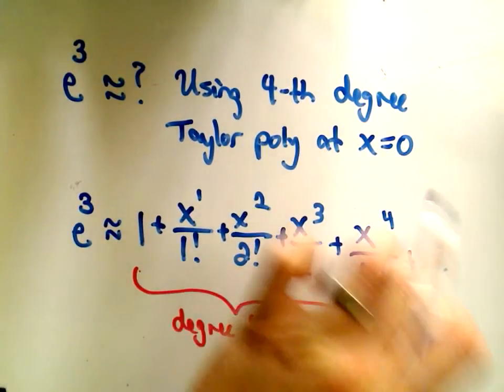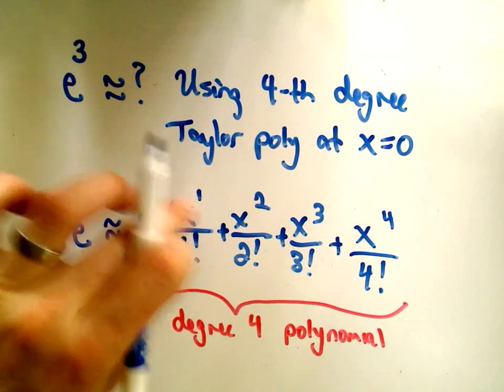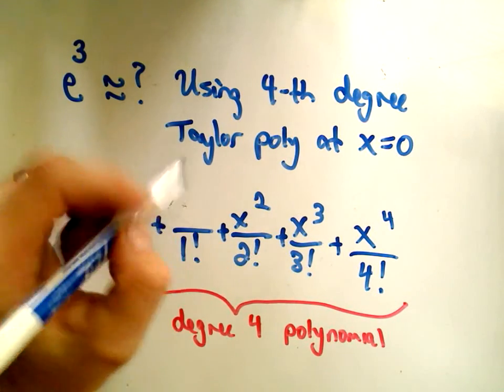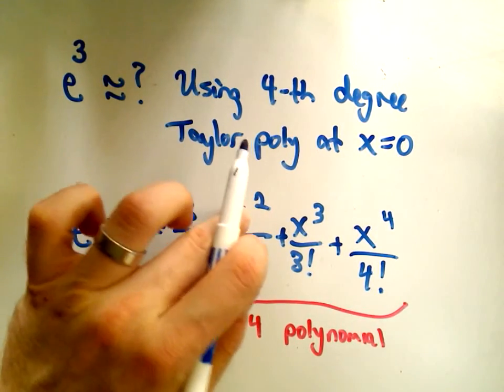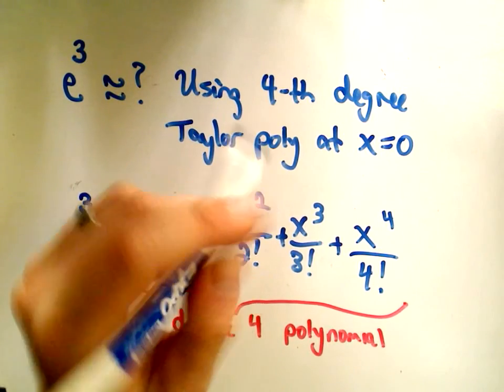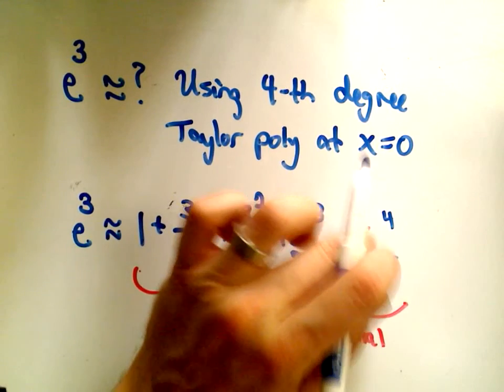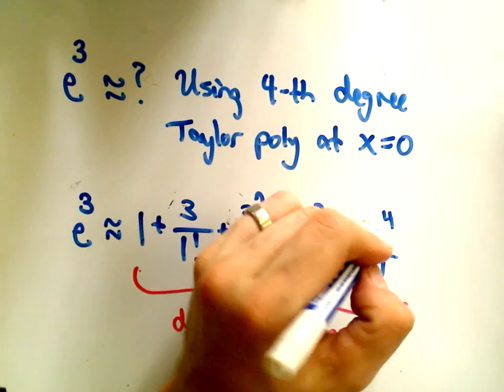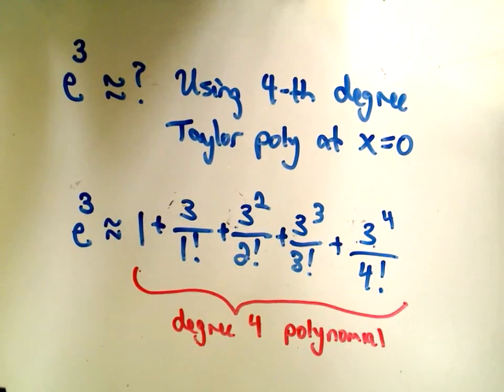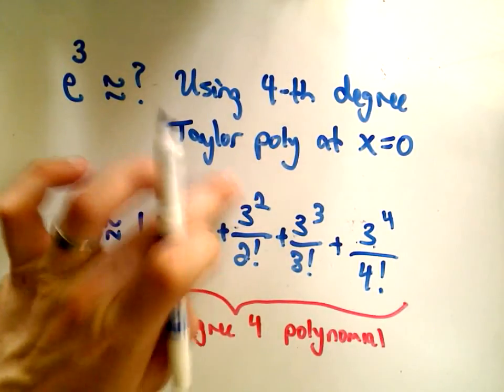So e to the third will be roughly equal to 1 plus 3 over 1 factorial, 3 squared over 2 factorial, 3 cubed over 3 factorial, and then 3 to the fourth over 4 factorial.